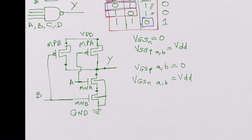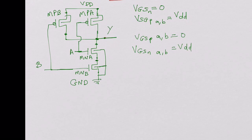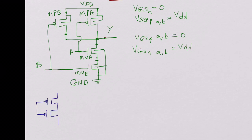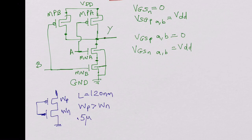That is how a CMOS NAND gate operates. Now let's look at the W by L ratios for the CMOS NAND gate. For an inverter, depending on the mobility of holes and electrons, WP is always greater than WN. Assuming 120 nm technology where L is fixed at 120 nm, WP is approximately 0.5 micron and WN is approximately 0.3 micron.